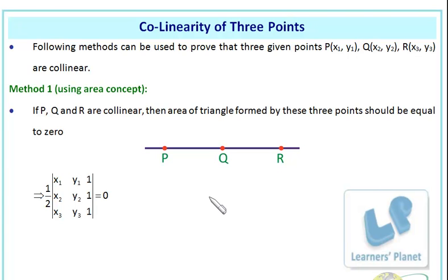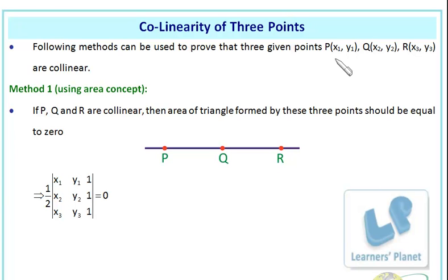The next important concept is the collinearity of three points. Suppose we have three points P, Q, and R. How do we determine whether they are collinear? There are various methods. We have three points with coordinates (x1, y1), (x2, y2), and (x3, y3), and we need to establish a condition to confirm collinearity.